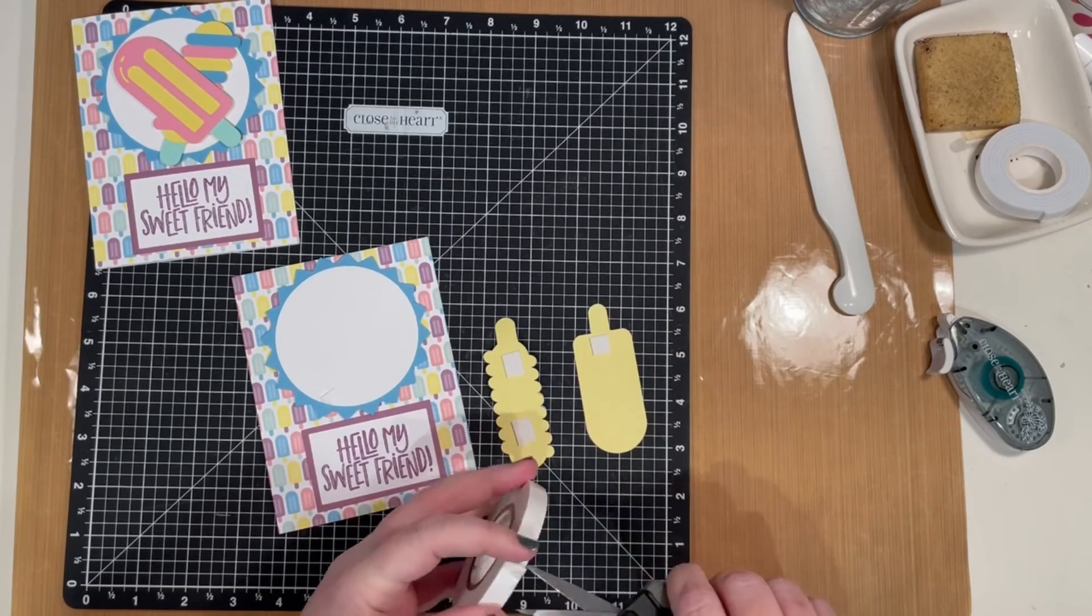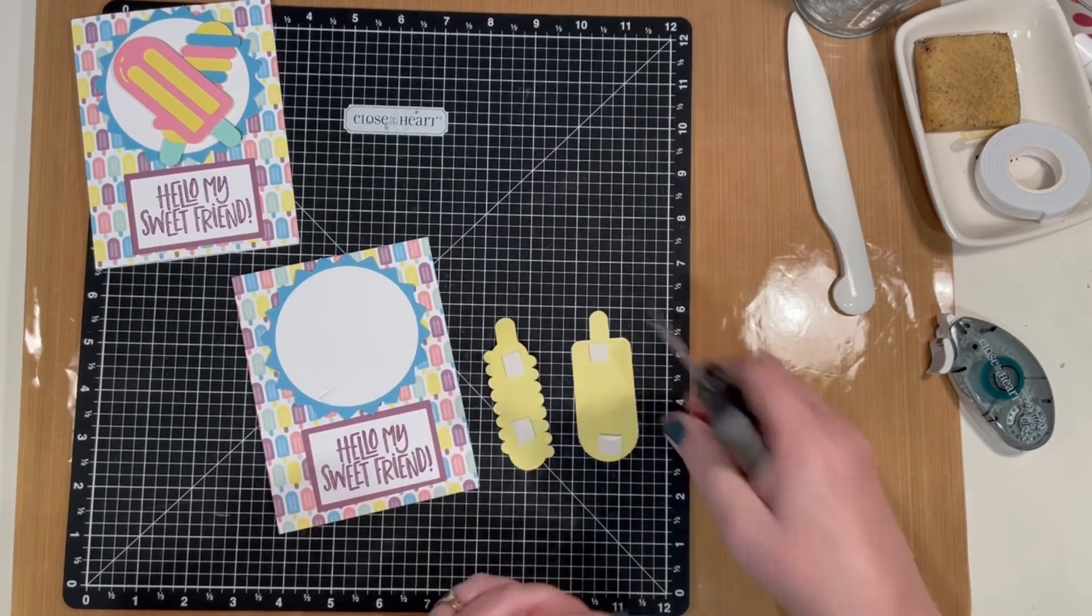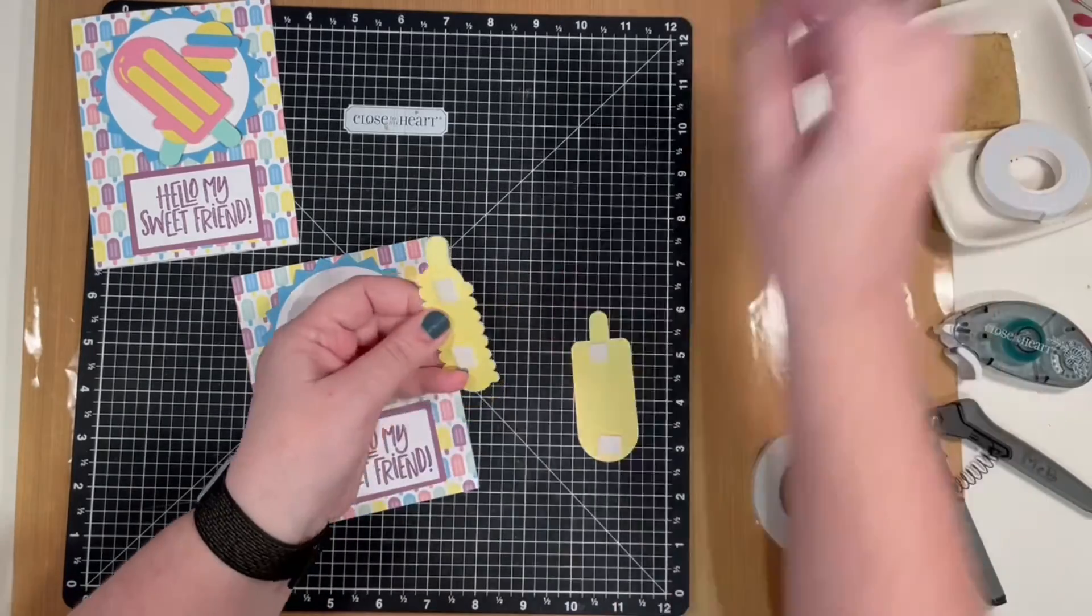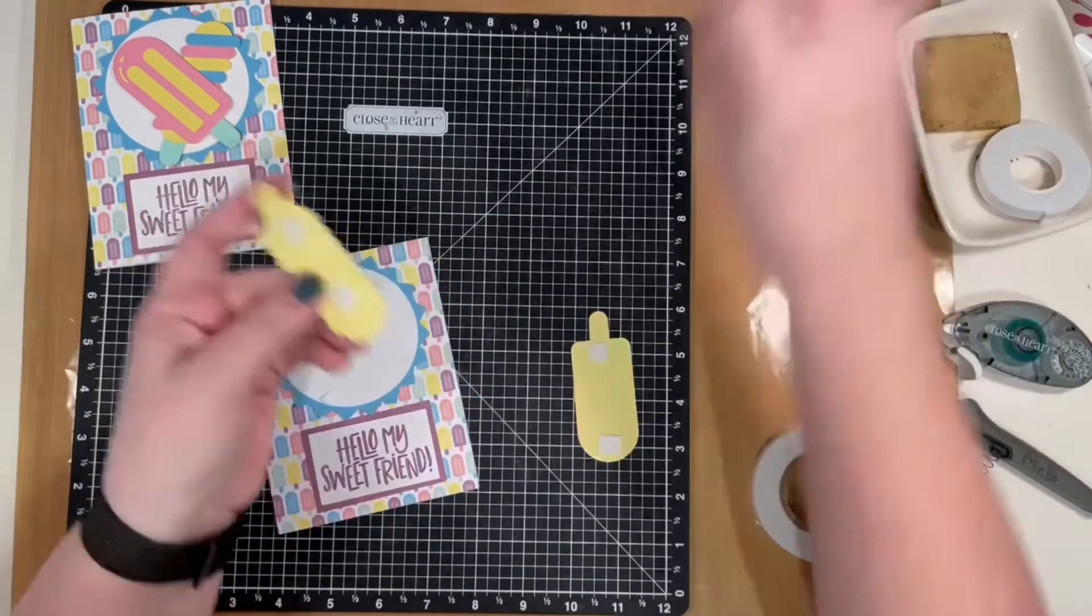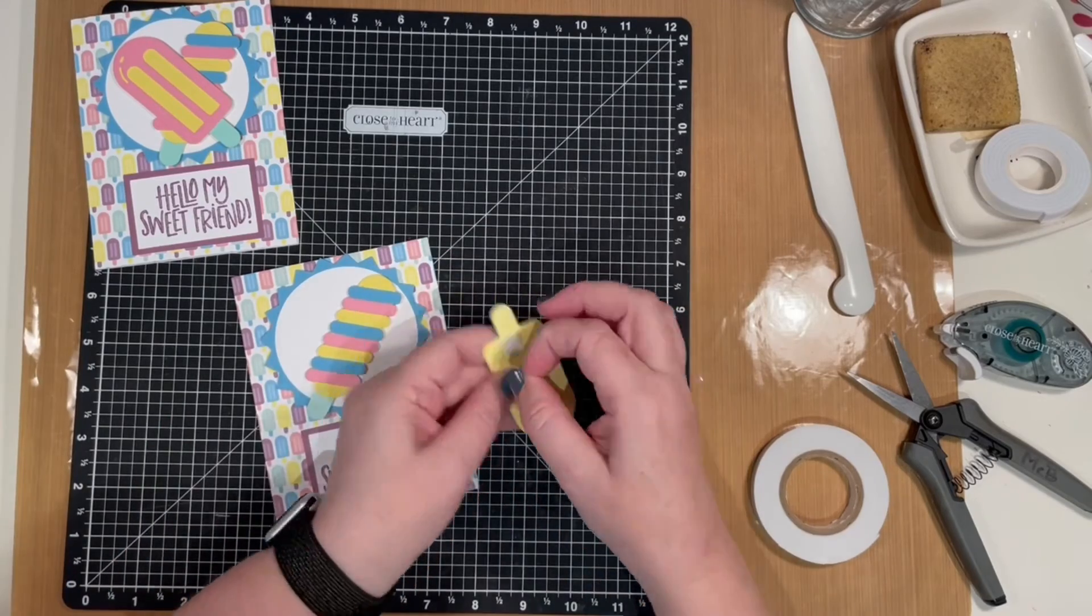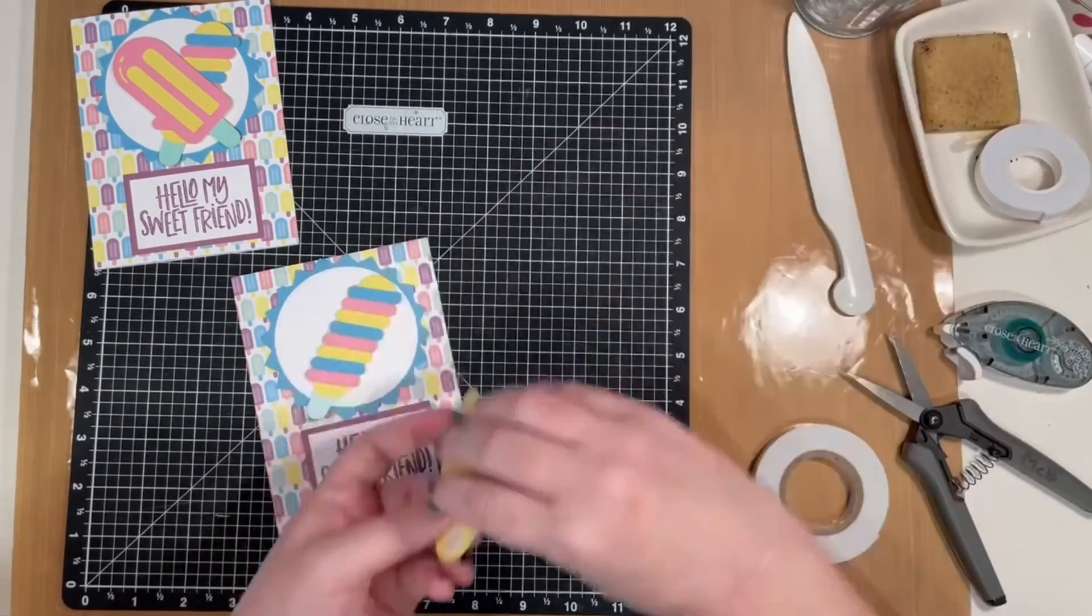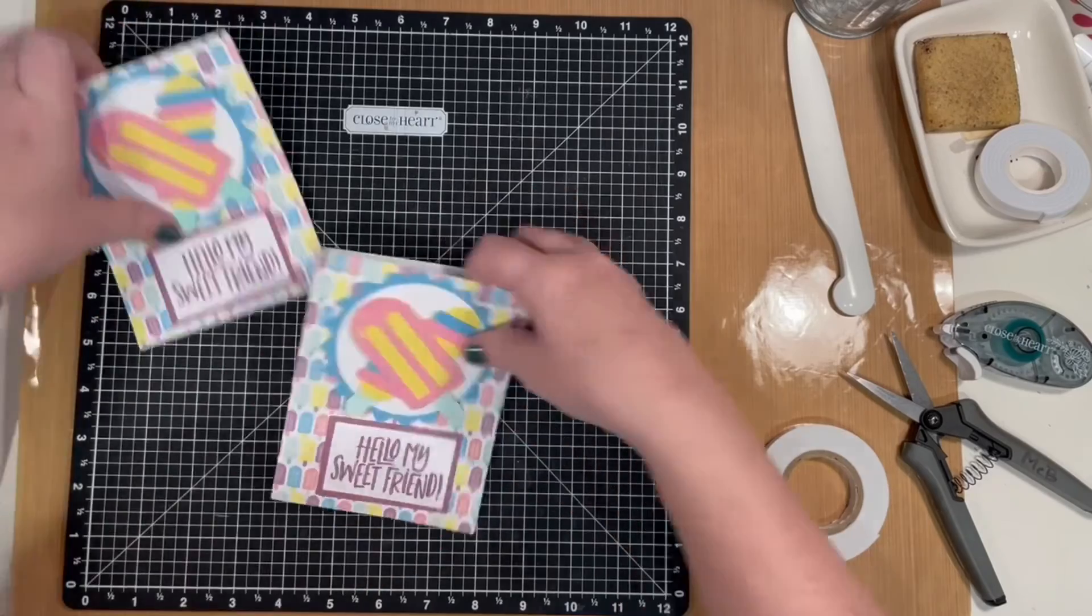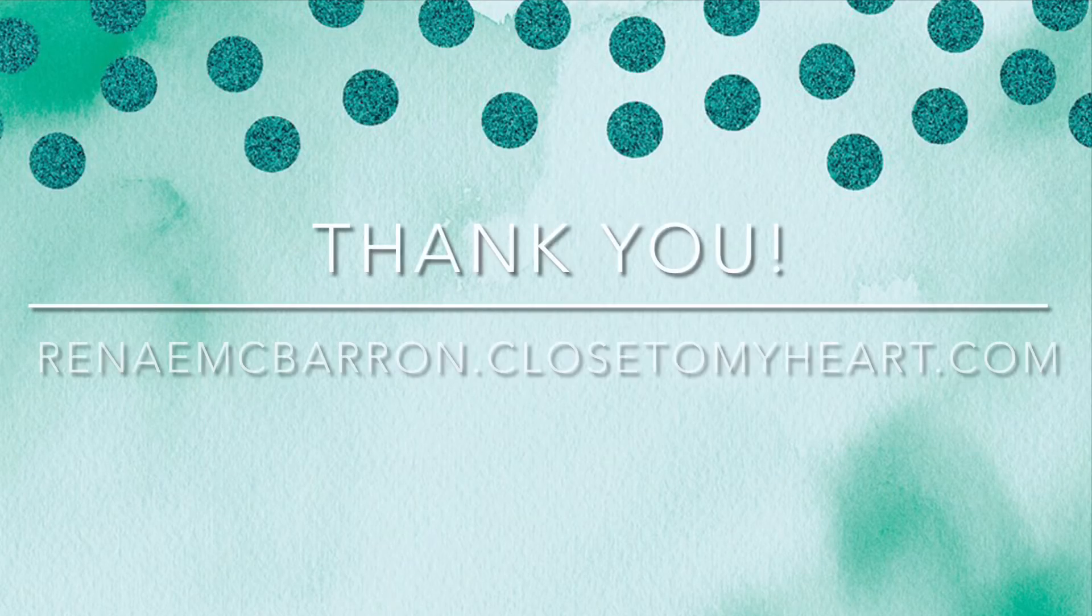For the popsicle with the repeating pattern, use thin 3D tape on it. For the other one, when you put that thin 3D tape on, just do the top and bottom because you leave room in the middle for it to cross over the other popsicle. And then you're done. Thank you!